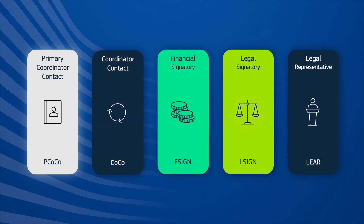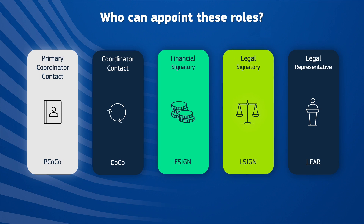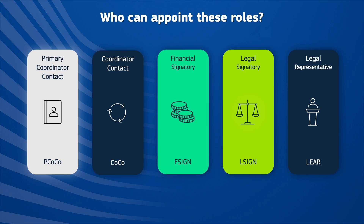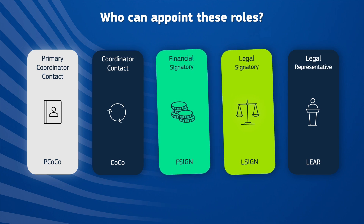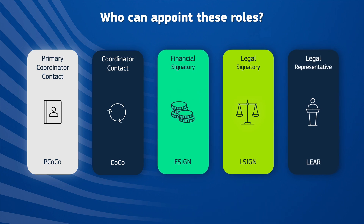Under any given project or contract, at least one legal signatory must be assigned for each beneficiary. Additionally, one financial signatory must be assigned for each beneficiary of any given project, from the existing pool of L signs and F signs set by the Lear at the organization level.